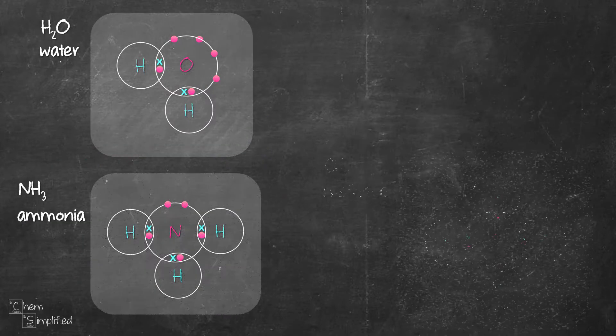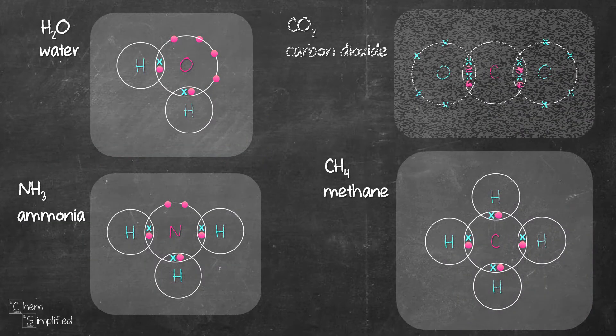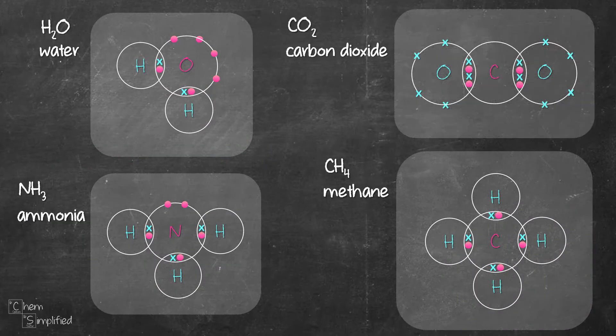Here are the four dot and cross diagrams we have drawn: water, ammonia, methane, and carbon dioxide.